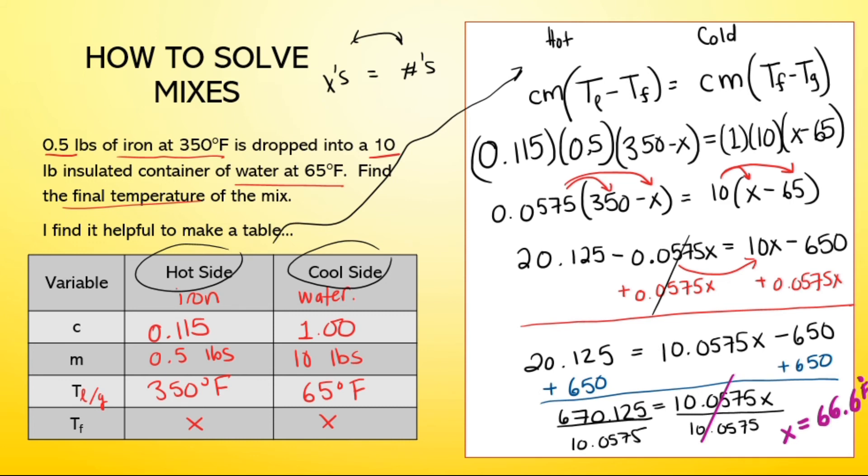So first check, is our final temperature in between our two input temperatures? Yes. Now, observation. Look at the massive difference between initial temperatures and where the final temperature ended up. Like that iron cooled an intense amount. The water rose 1.6 degrees in temperature. That's because it's a small amount of iron in a relatively large amount of water. But seriously, it's only 20 times more.